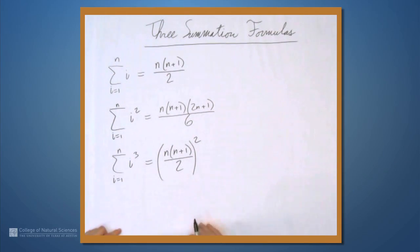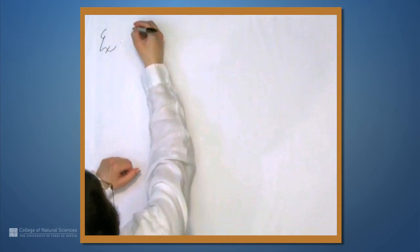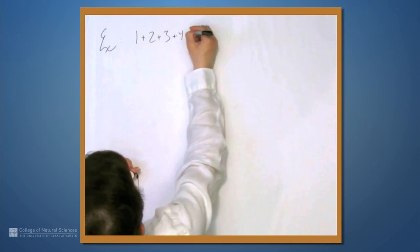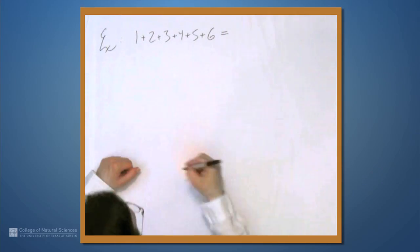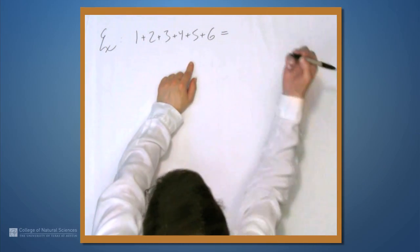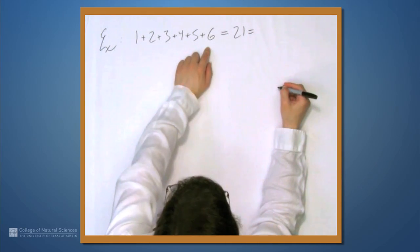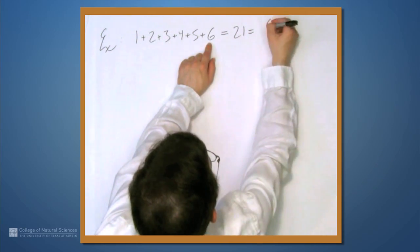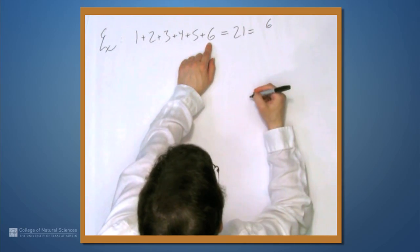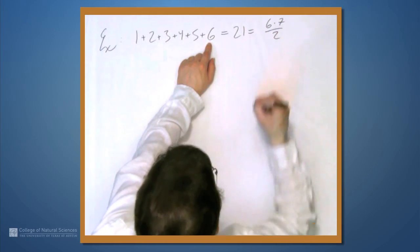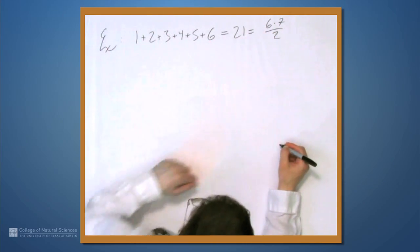Let's look at an example. So 1 plus 2 plus 3 plus 4 plus 5 plus 6. Well, you can verify that this equals 21. And 21 is, by the formula, n is now 6. So we have 6, which is the n, times 7, which is the n plus 1. So we have 42 over 2, right? 42 over 2 is 21.